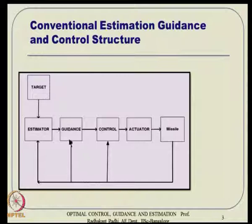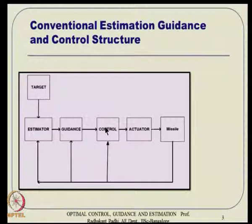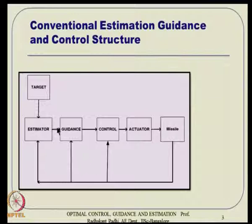That estimated information is fed to the guidance system. Guidance gives a lateral acceleration command, which goes to the control system. Control can have its own two or three inner loops, which eventually feed to the actuator. The actuator commands fin deflection, which couples with the missile aerodynamics, changing its orientation and force/moment, and the missile corrects its path.